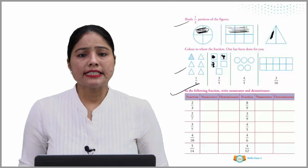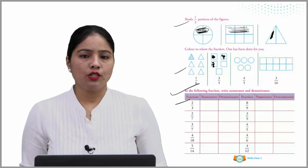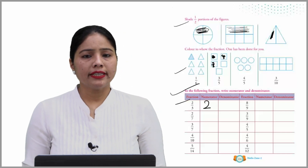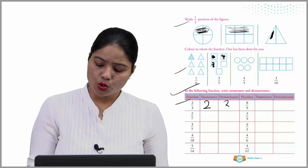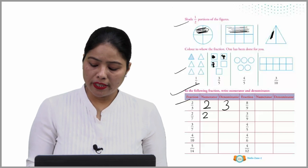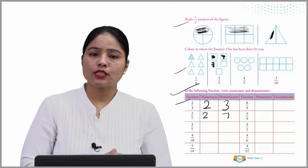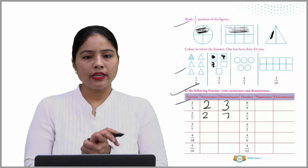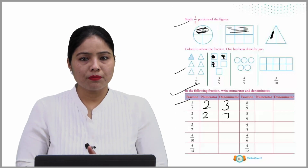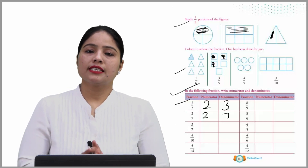In the following fractions, write numerator and denominator. So, this is our first fraction — two by three. Numerator हो गया two, so write it two. Denominator कितना है? Three — so write it three. Similarly, यहां हमारा numerator हो गया two, यहां हमारा denominator हो गया seven. Because we know that the upper part is called numerator and the lower part is called denominator. I hope you understood the concept. With this we end the chapter — just do practice and revise all other questions and answers very nicely.